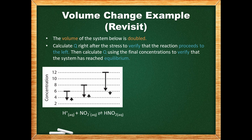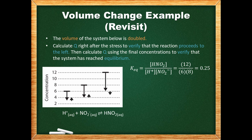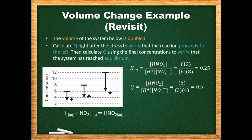We are next going to revisit a problem from chapter 2.3. Before, we used Le Chatelier's principle to determine that the system would proceed to the left to re-establish equilibrium. Now let's verify this by comparing the reaction quotient to the equilibrium constant. At the initial equilibrium, we have a hydrogen ion concentration of 6 moles per liter, nitrite at 8 moles per liter, and nitrous acid at 12 moles per liter. These concentrations are used to calculate the equilibrium constant. When the system is diluted so its volume is doubled, all the concentrations are halved. The value we get for Q is clearly larger than the equilibrium constant, so the reaction must proceed to the left, which agrees with our earlier answer.